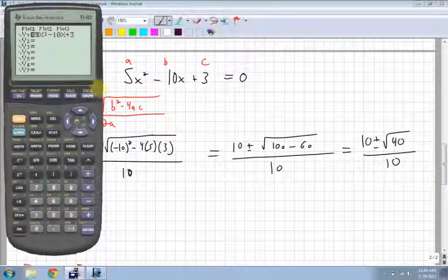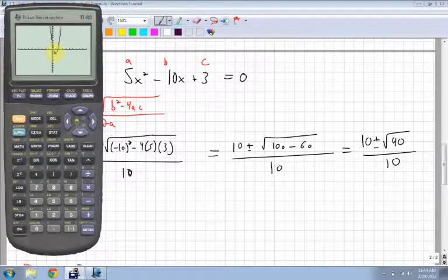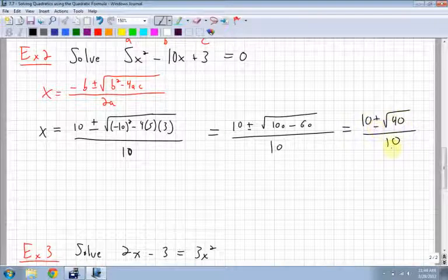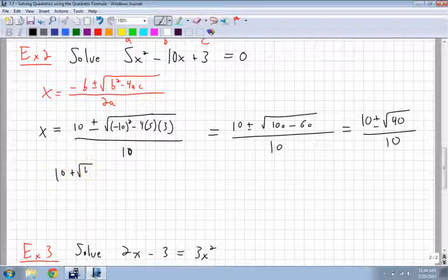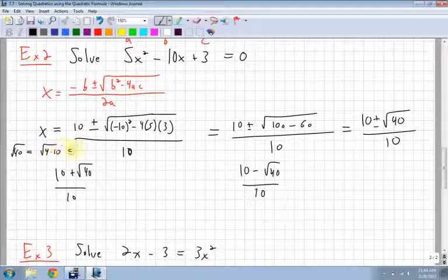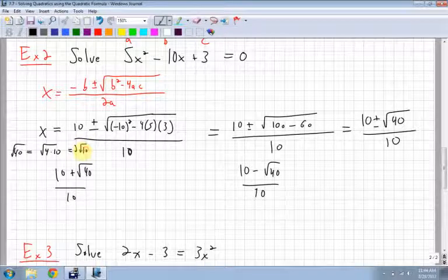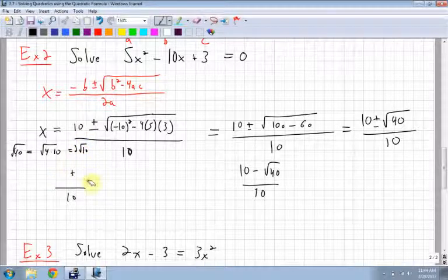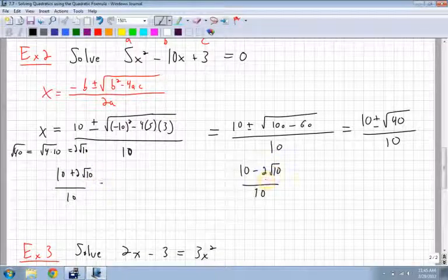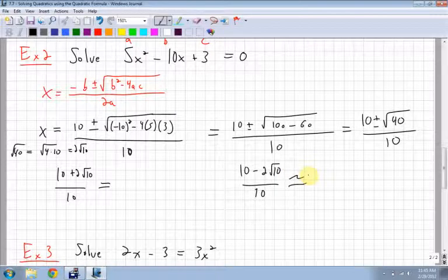So let's just finish this one off. We get 10 plus root 40 over 10, and 10 minus root 40 over 10. Notice that root 40 can break up into 4 times 10, which breaks up into 2 root 10. So this becomes 10 plus 2 root 10 over 10, and this one becomes 10 minus 2 root 10 over 10. And again, you could change those into decimals if you wanted to. You could approximate them.